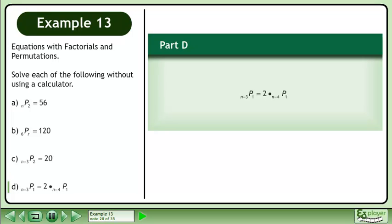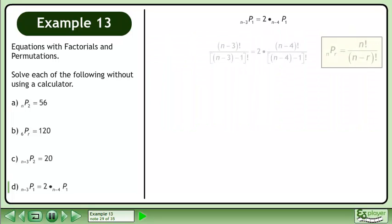In Part D, solve (n-3)P1 equals 2 times (n-4)P1. Write each permutation as a fraction.